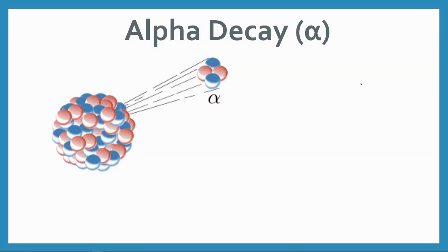There are several types of radiation and we're going to look at each one individually. One type is alpha decay.